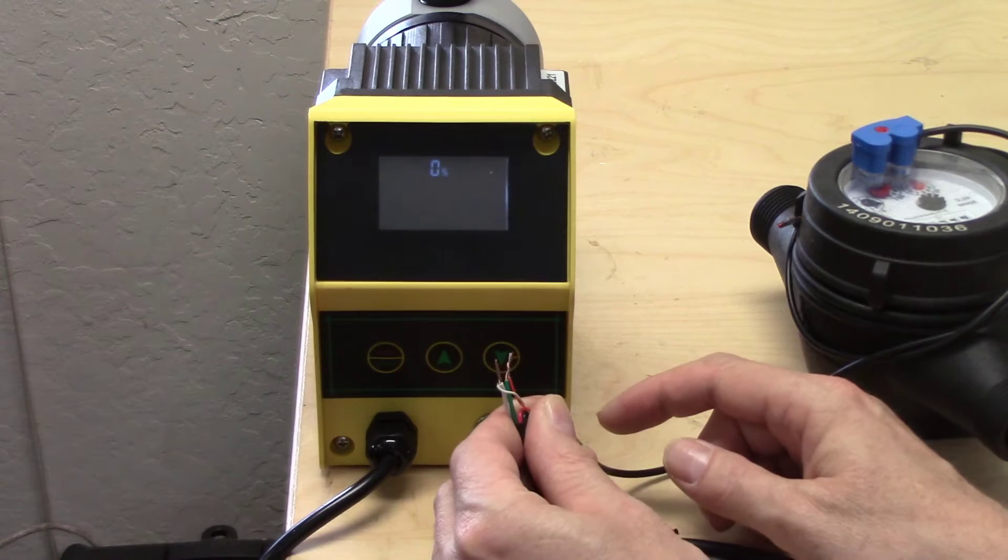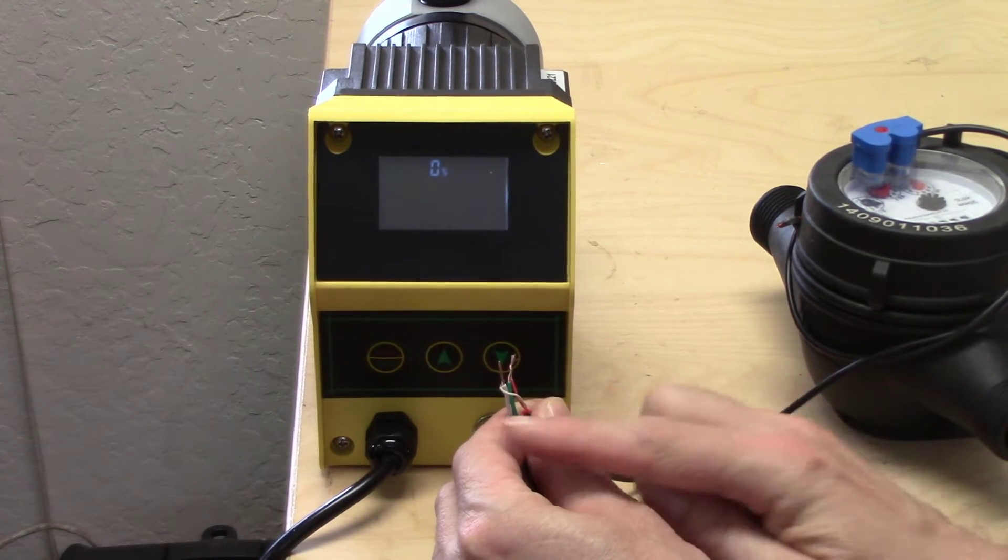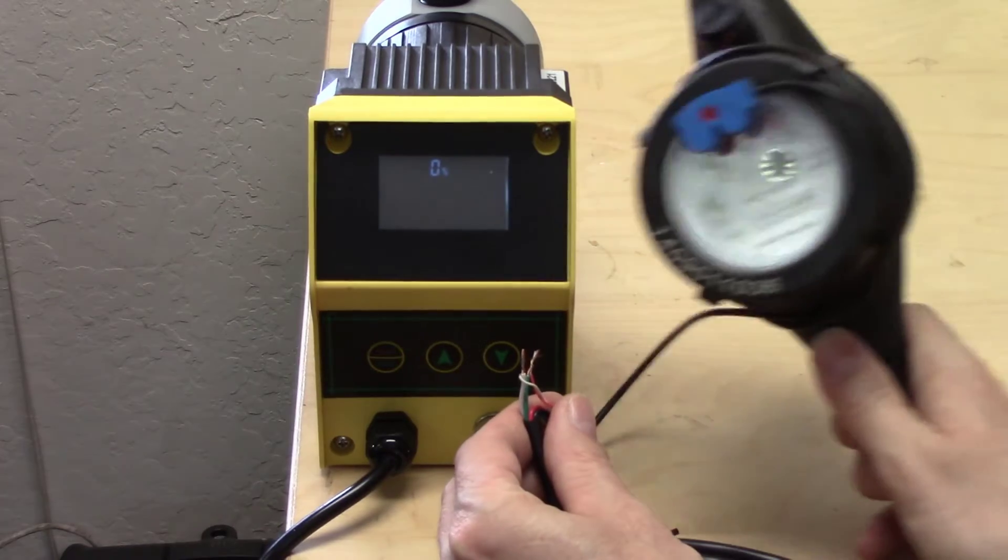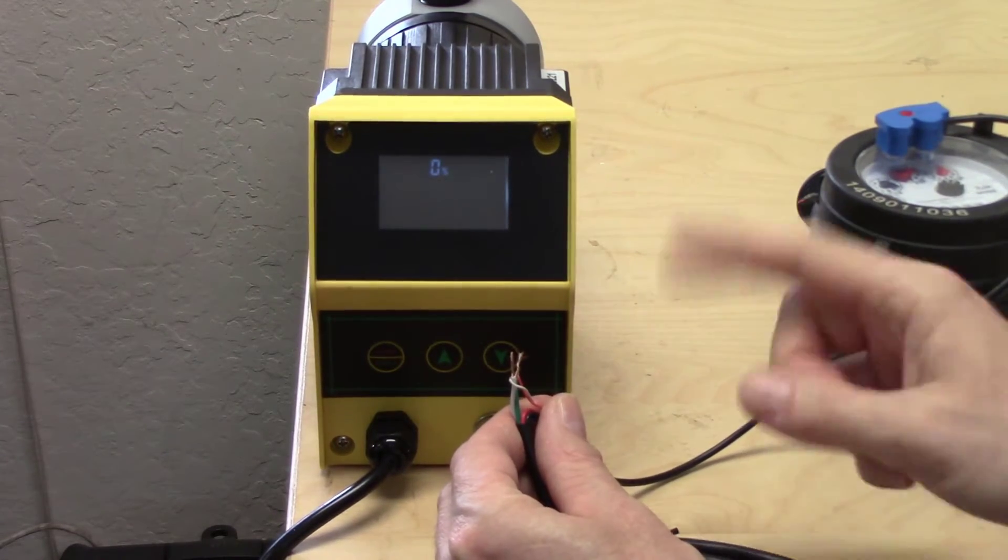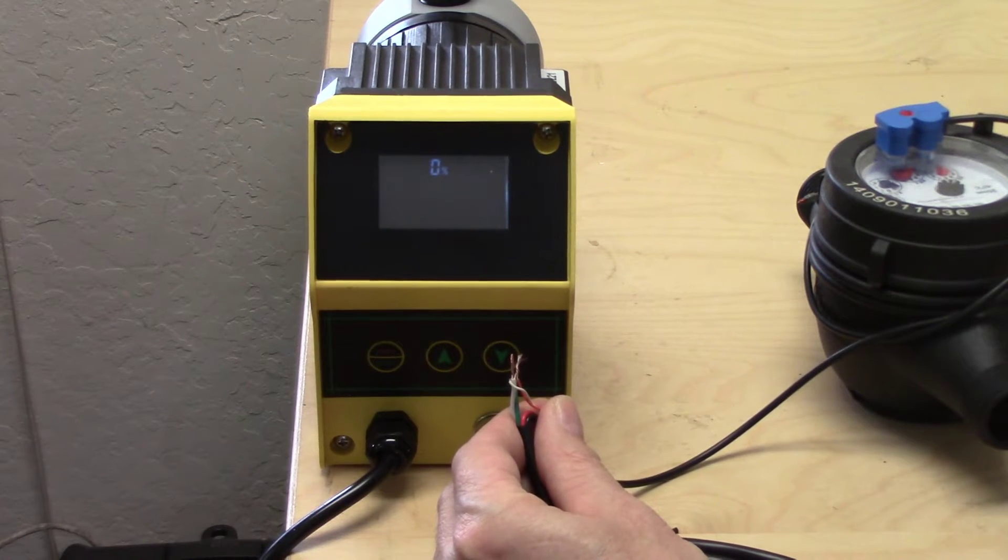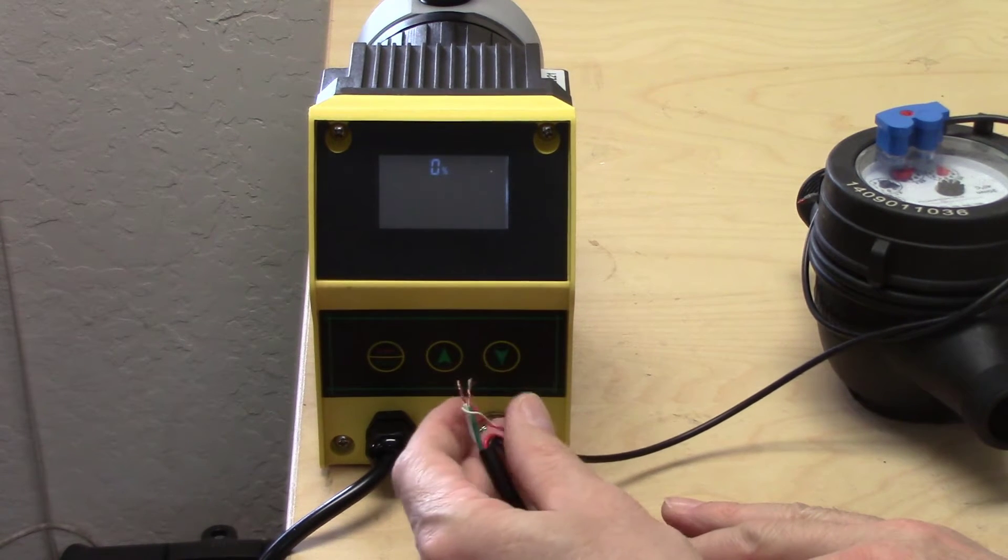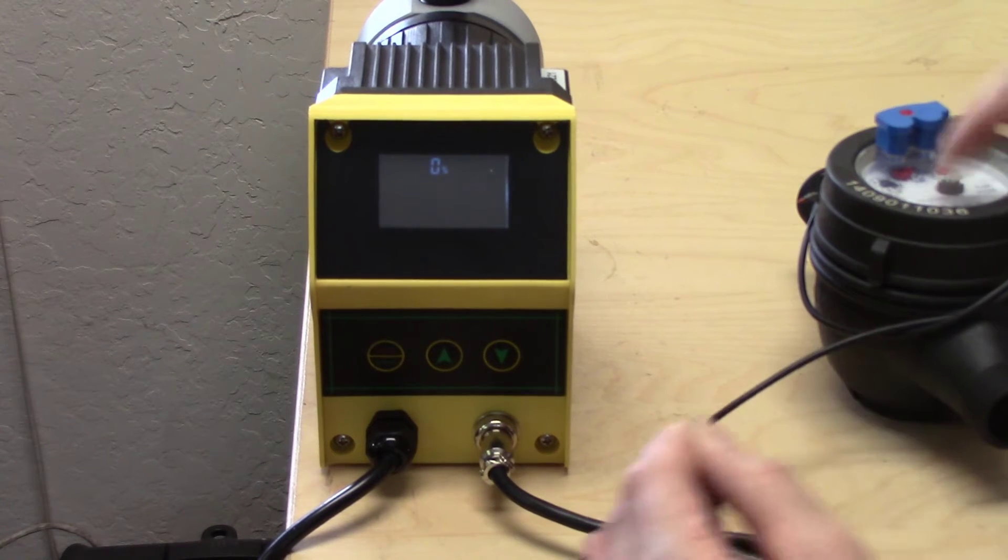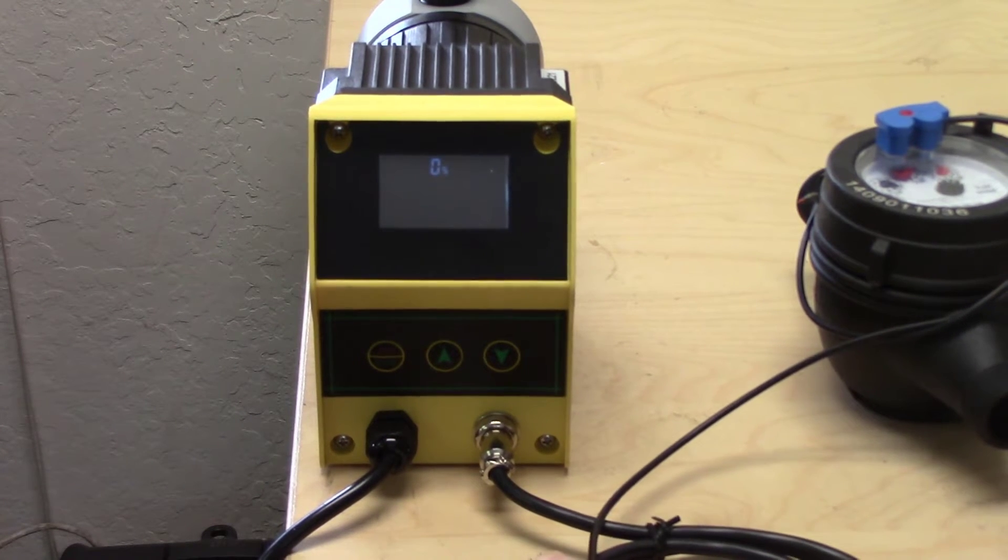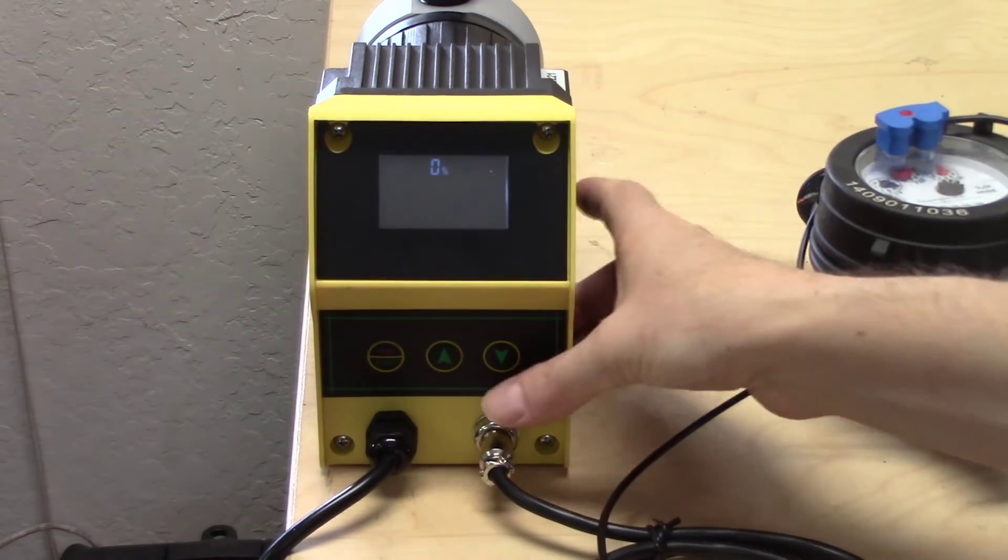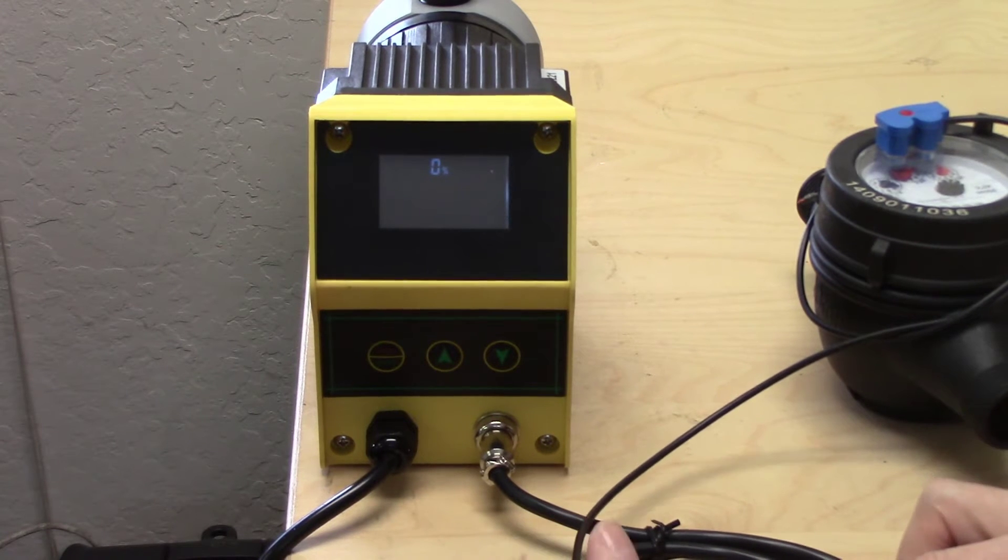That is the white common wire. White goes to white, and red from the flow meter goes to the green wire on the cable from the Precision Digital. So it goes white to white and red to green. When you have those hooked up, when a gallon of water flows through the meter, it will send a pulse and that will trigger the pump to pulse and squirt chlorine however many times per gallon that you choose.